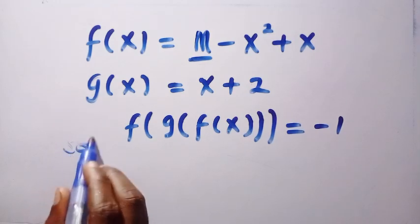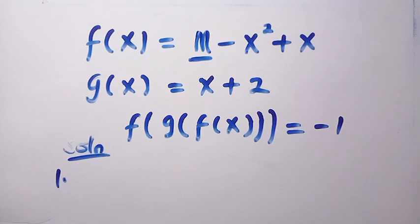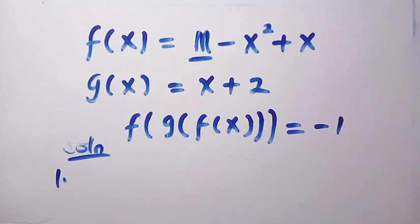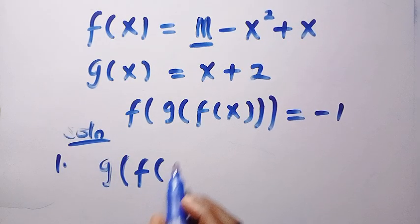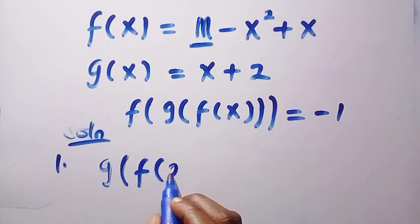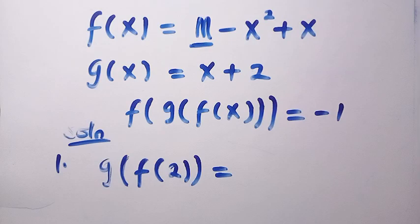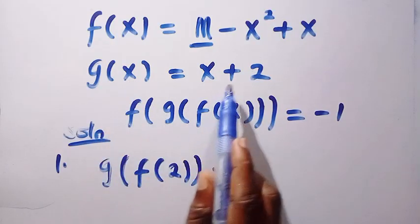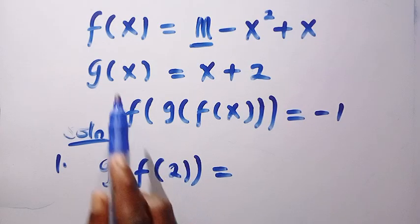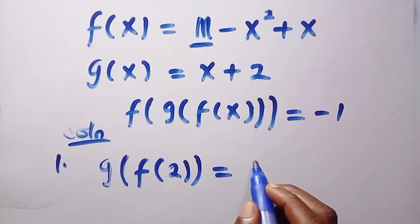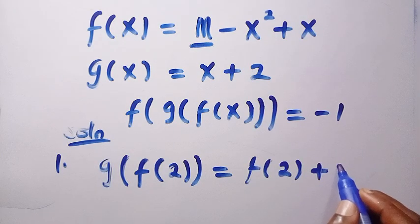Let's consider method one. We have f(x) = m - x² + x. If I start from g(f(x)), I'm going to write g(f(·)). Suppose I change this x to 2 — anywhere we see g(x), the x has become f(2). So we change this x to f(2). This is now the new domain for function g, giving us f(2) + 2.